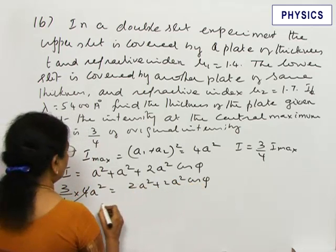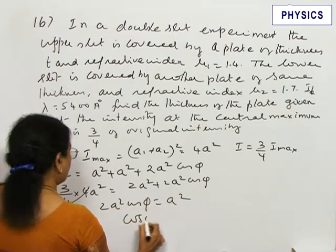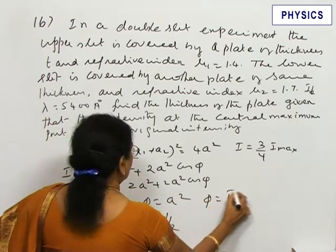So, 2a²cos φ equals a², or cos φ equals 1/2, or φ equals π/3.